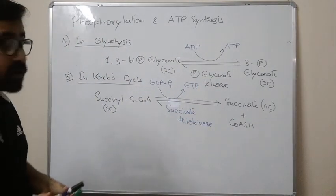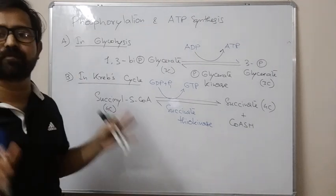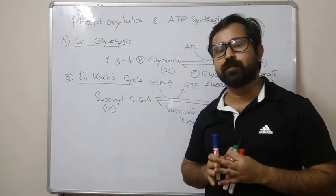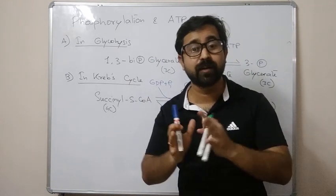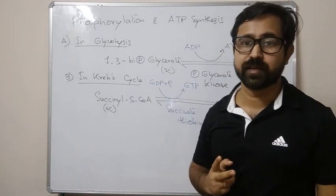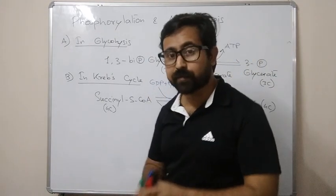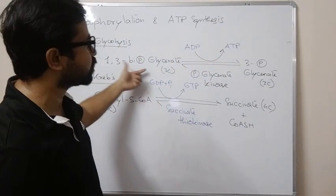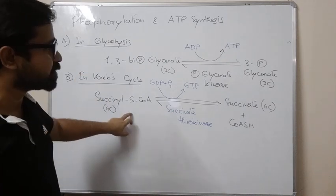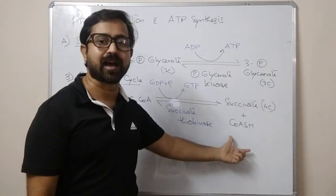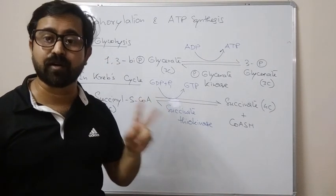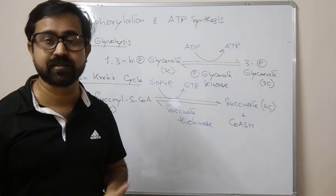Whether the gain is ATP or GTP, it does not matter — it is purely substrate level phosphorylation. The substrate provides the energy required for the phosphorylation reaction. The enzyme here has a slightly different name: succinate thiokinase, because the high energy bond involved is a sulfur (thio) bond, not a phosphate bond. In the whole respiratory pathway — glycolysis, Krebs cycle, oxidative phosphorylation — only these two reactions are substrate level phosphorylation reactions.